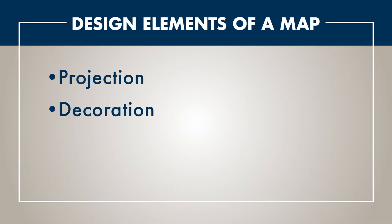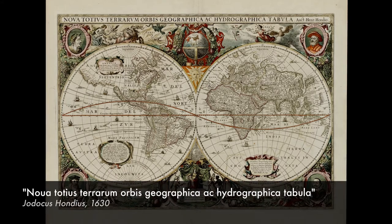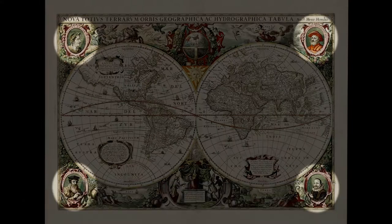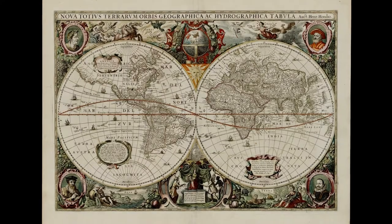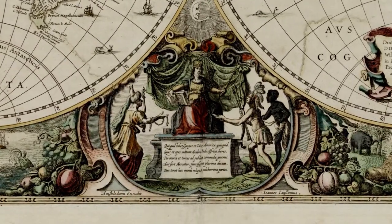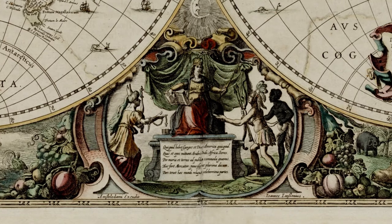Another element to consider when you're looking at maps is the decoration and the symbols that are used on a particular map. During the 1600s and 1700s, maps were elaborately decorated. You might ask, were they just trying to make the maps look pretty, or was there some symbolic meaning to the representation? A 1630 map of the world by Jodicus Hondius has images in each of the four corners of the four cartographers who were major geographers throughout history. But at the bottom center, there is an image showing three people worshiping somebody on a throne.